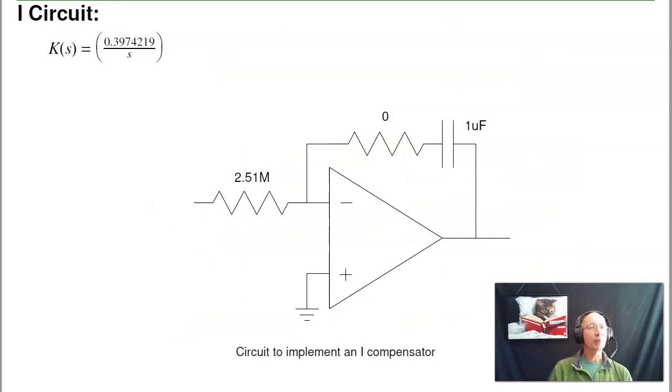If I want to implement it, I would just have an integrator. Here, R equals zero. And one over RC is my gain. One over RC is 0.397. So I pick C to be one microfarad, kind of arbitrarily. Solve for R, I get 2.5 meg.